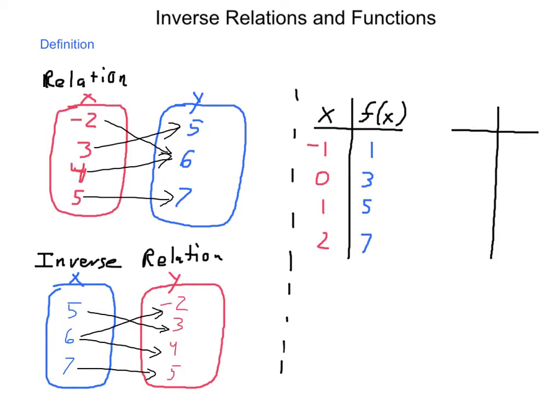You notice that originally our relationship was a function, but when we took its inverse, we no longer have a function because our new input value of 6 has two different outputs, negative 2 and 4. In the table, how would this look?